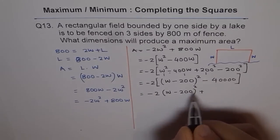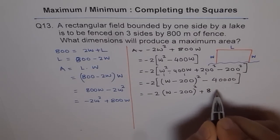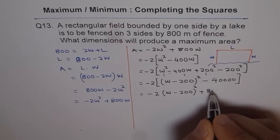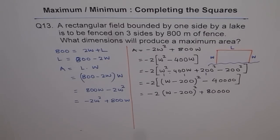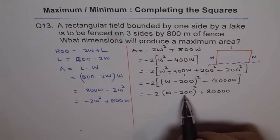Minus and minus becomes plus. 2 times 4 is 8. So 8, 80,000. So that is the vertex form of quadratic equation which gives us maximum in this case.